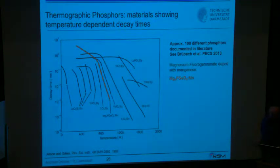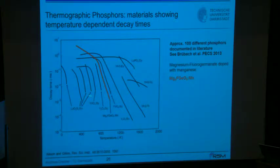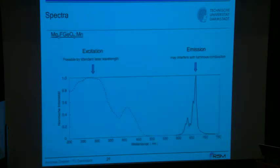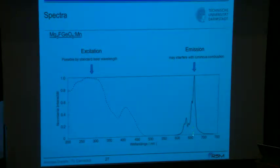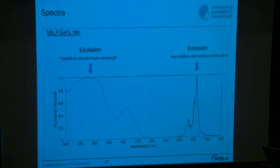We restrict ourselves again to the same phosphor as before the break, which has a broad range of temperature sensitivity with one branch of low sensitivity and one branch of high sensitivity. The spectrum of excitation and emission is shown here. The excitation has been done using a 266 nm laser where the absorption is relatively strong. The emission is around 600 nm, restricting ourselves to that branch as in the previous part.